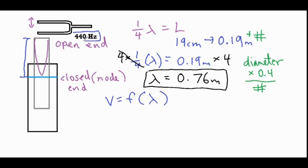We can take the 440 hertz and multiply it by 0.76 meters, and then that's going to equal 334.4 meters per second.